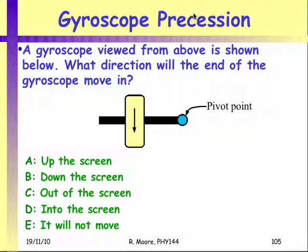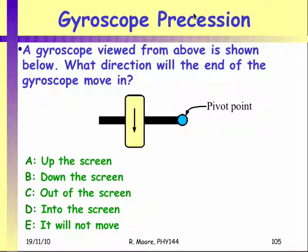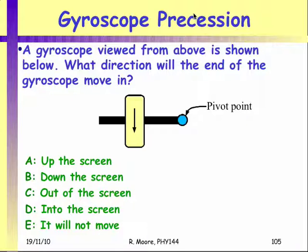Here's a question. If I have a gyroscope that pivots about here as its support, and the top of the gyroscope is rotating this way when viewed from above, with gravity acting down and into the page — which direction will this gyroscope precess?